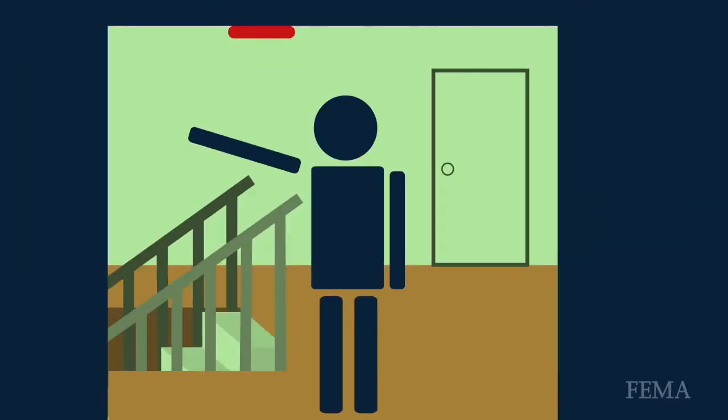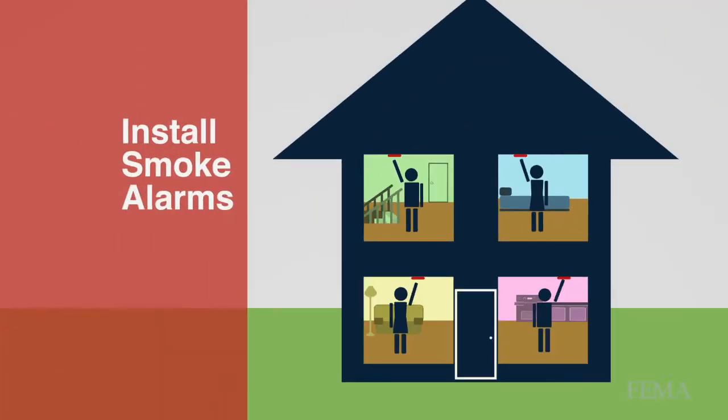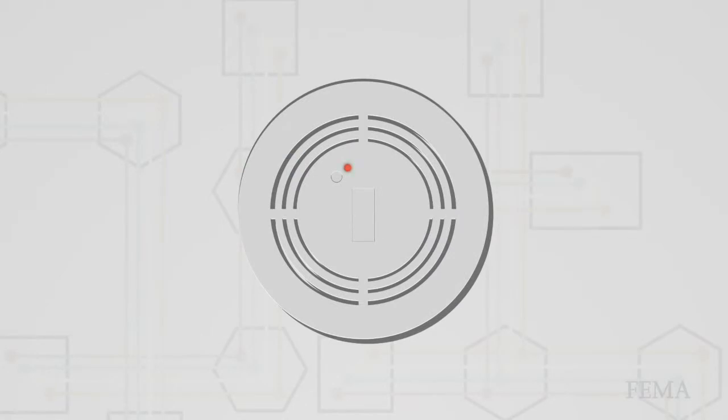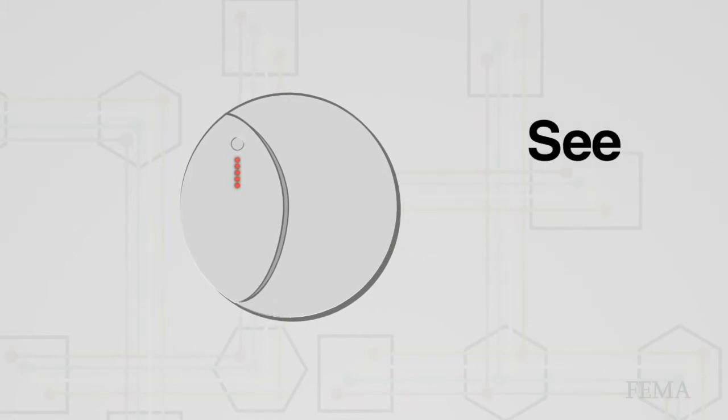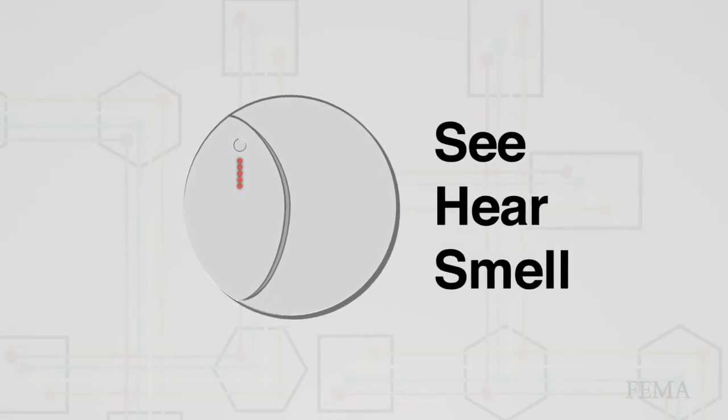Install smoke alarms inside and outside sleeping areas and on all levels of your home. Test alarms monthly and replace smoke alarms that are more than 10 years old. Alarms warn you of a fire before you see, hear, or smell it, giving you extra time to escape.